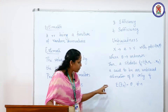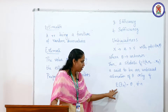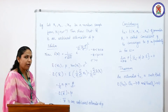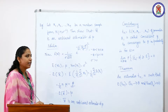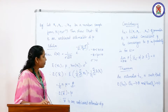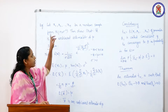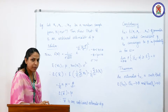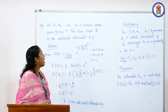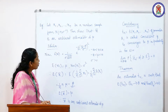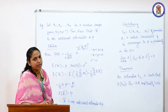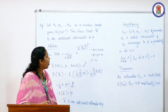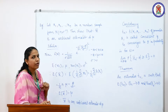That means the expected value of the statistic should be equal to the unknown parameter theta. Now let us consider an example for unbiasedness. Consider a random sample of observations of size n from a normal population with mean mu and variance sigma square. We can show that x bar, the sample mean, is an unbiased estimator of the population mean mu.